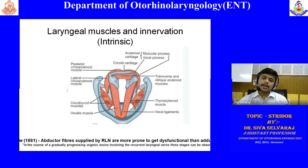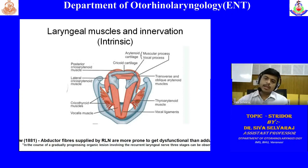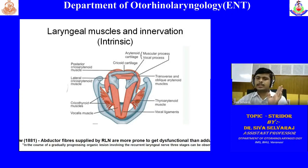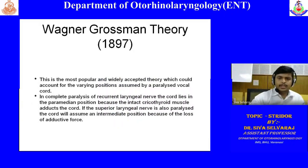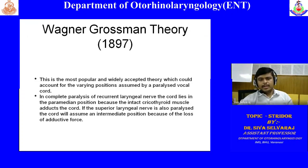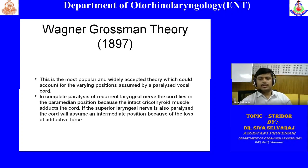If there is bilateral recurrent laryngeal nerve palsy of grade three severity, the glottic opening is fixed at a maximum of four millimeters. With only four millimeters of opening, the patient will have significant respiratory obstruction — this is a surgical emergency requiring immediate tracheostomy. The Wagner-Grossman theory, postulated 16 years after Semon's law, is the more widely accepted explanation: in complete recurrent laryngeal nerve paralysis, the cord lies in paramedian position because of the intact cricothyroid muscle supplied by the superior laryngeal nerve.